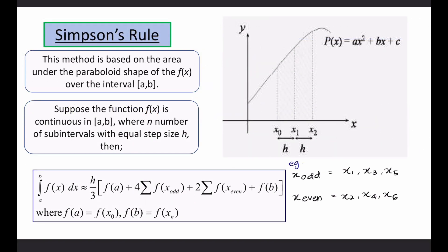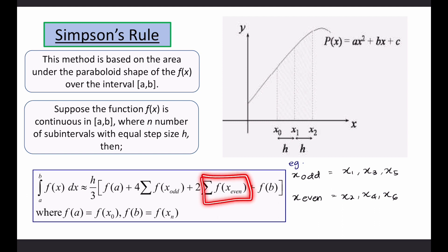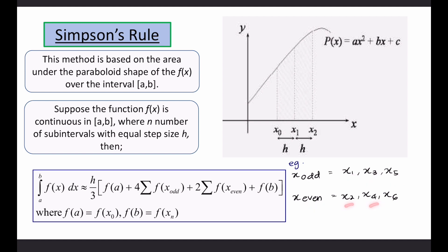This is the last method for numerical integration: Simpson's rule. This method is based on the area under the parabolic shape of f(x). The approximation equals (h/3) × [f(a) + 4 × (sum of f(x) at odd indices) + 2 × (sum of f(x) at even indices) + f(b)]. You must determine the odd-indexed and even-indexed x values: x odd is x₁, x₃, x₅, ...; x even is x₂, x₄, x₆, ...